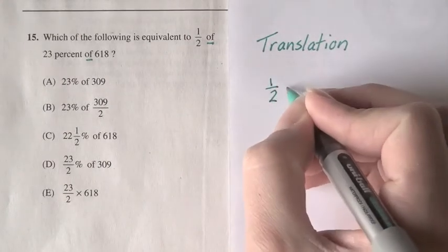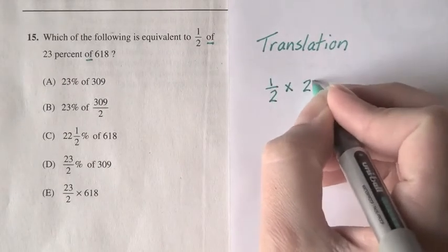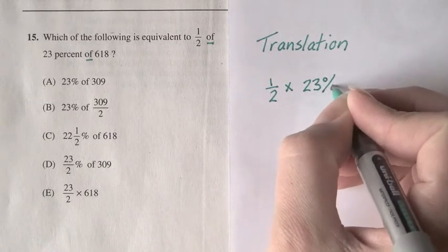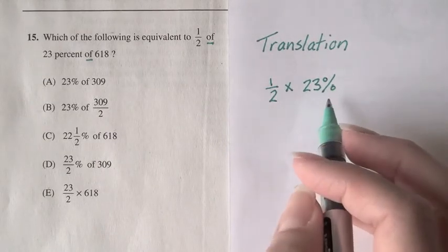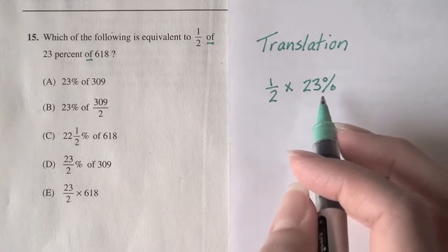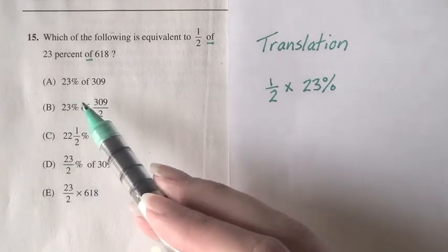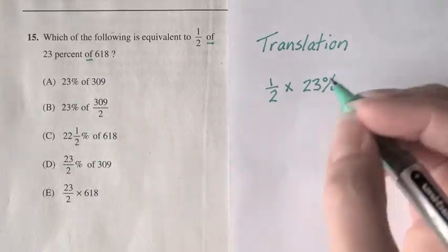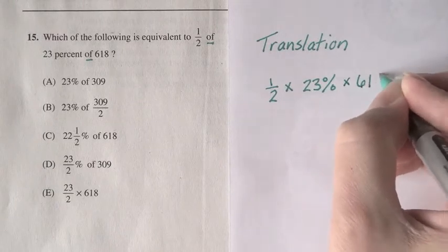We want one-half times 23%, and I'm purposefully keeping the percent sign rather than converting to 0.23 because all answer choices have the percent sign, times 618.